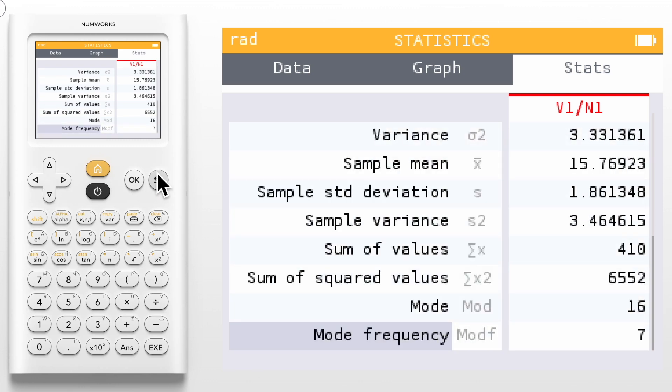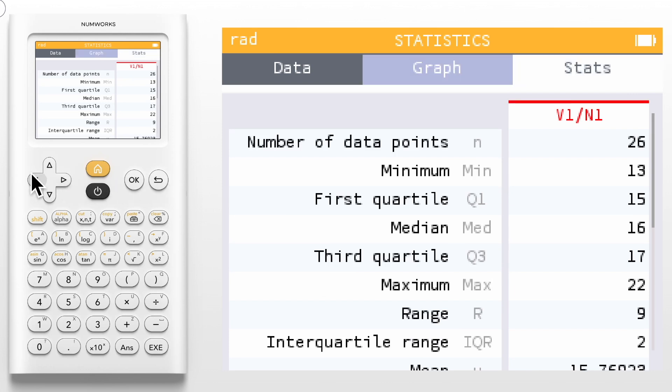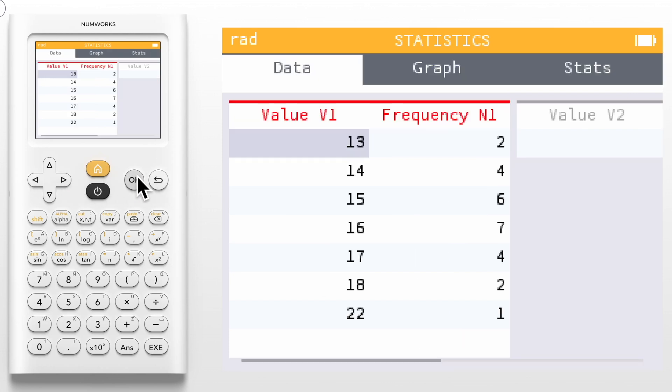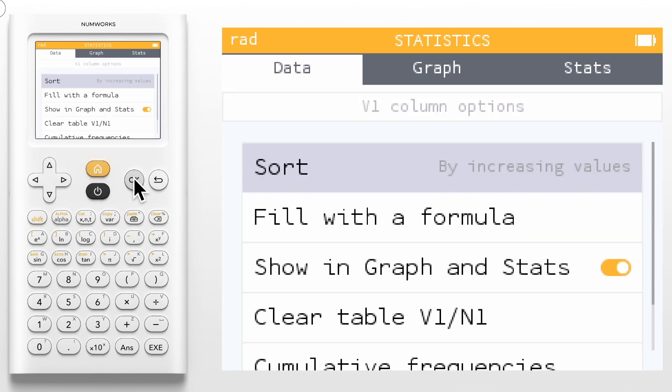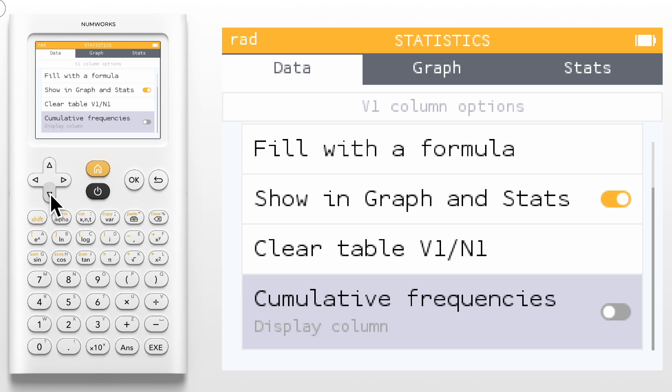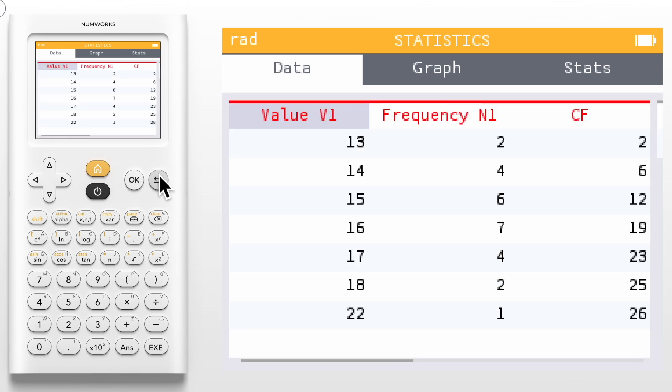Let's return to the data tab and explore the column options. Navigate to the top of your data set and click OK. Here we can select to sort our values in increasing order, fill our column with a formula, toggle on whether or not we want to display these values in the graph and stats tab, clear the table, and add a column of cumulative frequencies. Let's start by toggling on the cumulative frequencies. Clicking the back button we now have a column of cumulative frequencies.